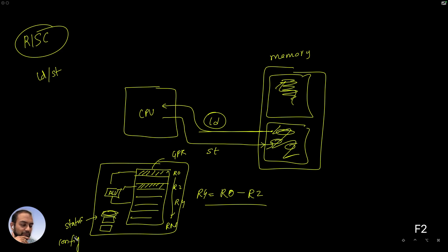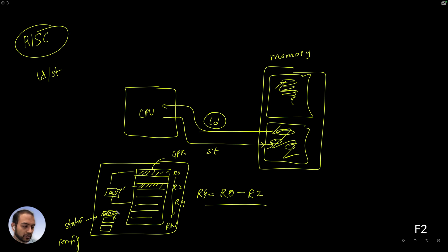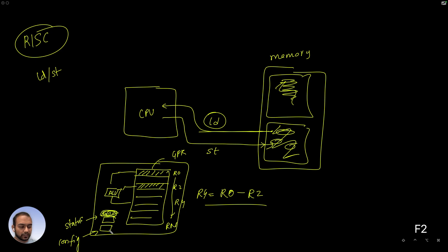The status register will capture: was the result negative? Did we have an overflow? Did we generate a negative number? Was a zero generated? Those kinds of things are stored in the status registers. And sometimes the CPU can operate in many different privilege modes — those kinds of features are controlled by the config registers. Long story short, the CPU can be imagined to be a bunch of registers: some general purpose registers and some status and configuration registers.